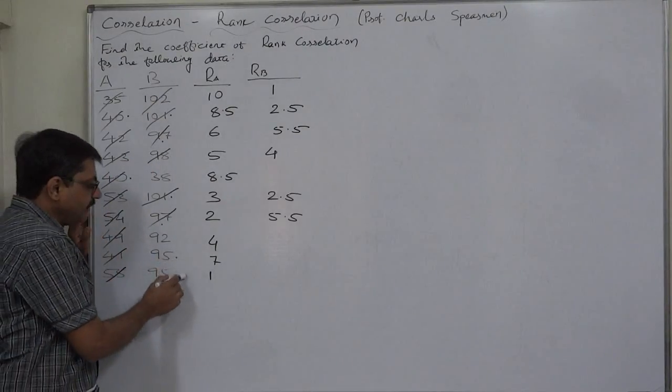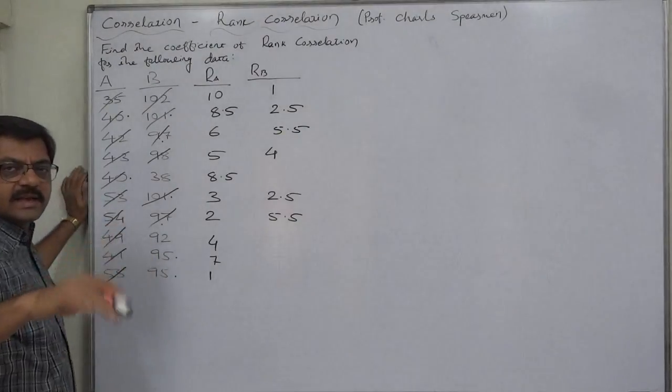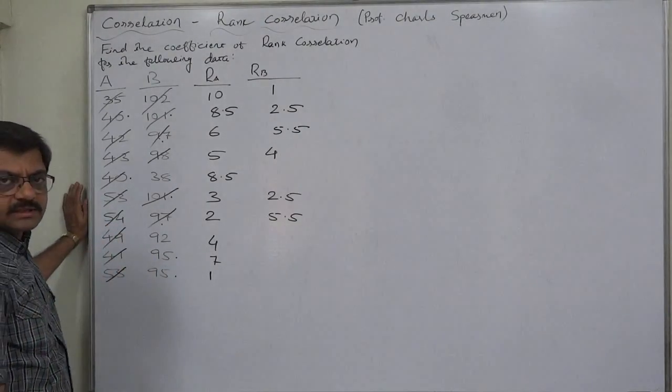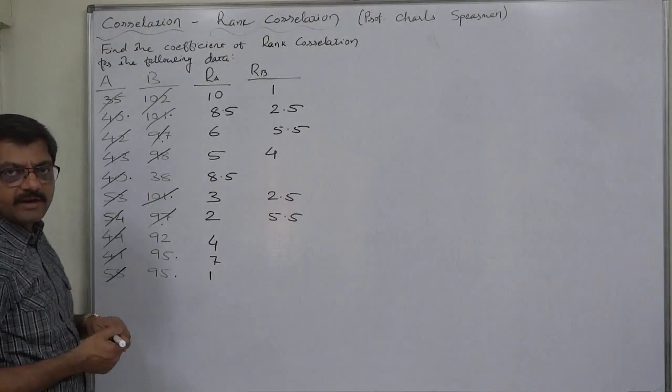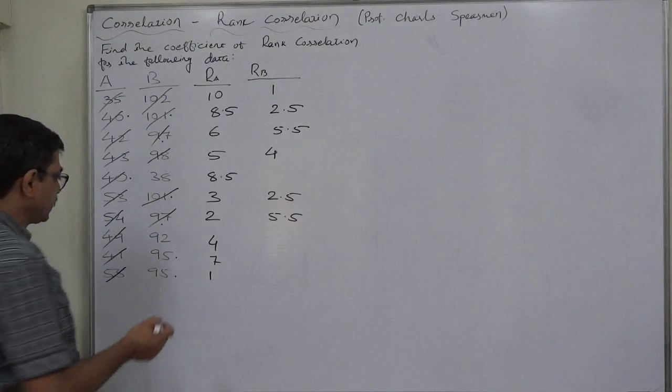So again, 7 and 8 are the two consecutive ranks but we have to take mean 7 plus 8 divided by 2, 15 divided by 2, 7.5.